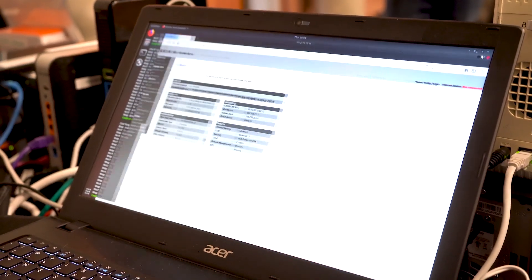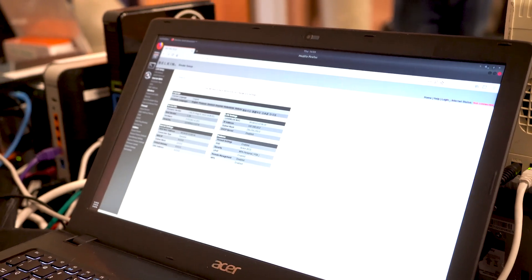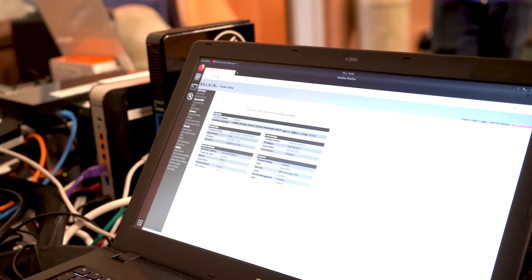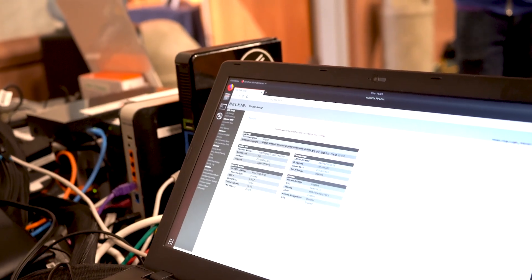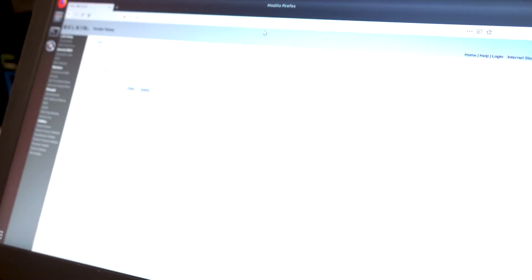So this one's pretty easy and also funny. This is the Belkin router, the normal login page for it. You could probably, if you were to look for them on Shodan, you'll probably find a bunch of these online. So after you figure that out, I'm just going to hit the login page. After you hit the login page, it requires a password.